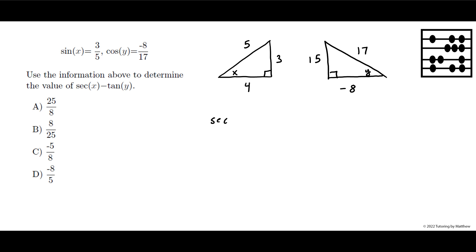The secant of x is the reciprocal of cosine of x. So, cosine of x is 4 fifths, the reciprocal of that is 5 fourths. Tangent of y is opposite over adjacent, 15 over minus 8.